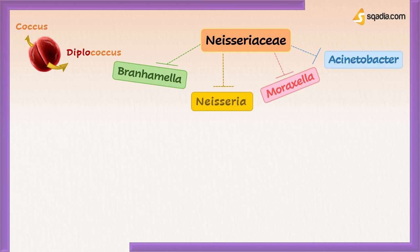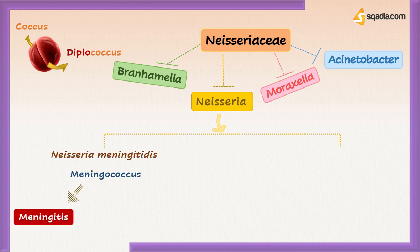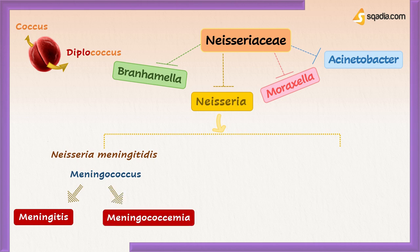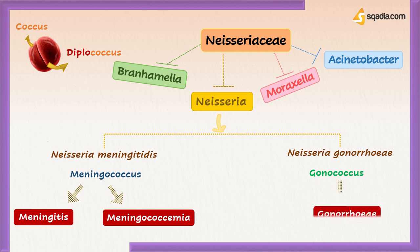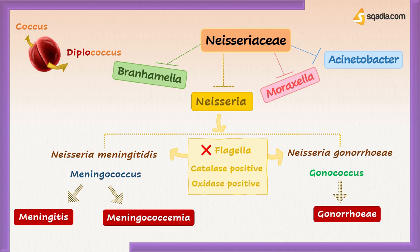Two pathogenic species of Neisseria include Neisseria meningitidis, or meningococcus, causing meningitis — the inflammation of the protective membranes covering the brain and spinal cord — or life-threatening sepsis called meningococcemia; and Neisseria gonorrhoeae, or gonococcus, causing the sexually transmitted disease gonorrhea. Both lack flagella and are catalase-positive and oxidase-positive, which is a key test in their identification.